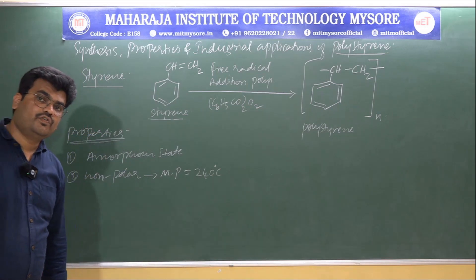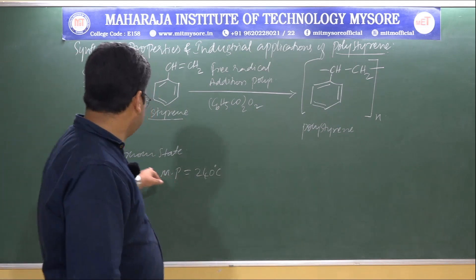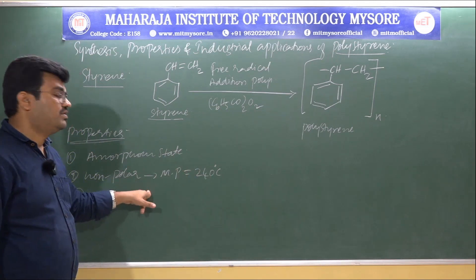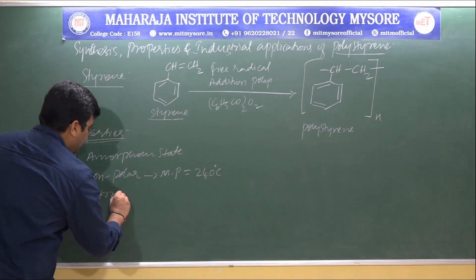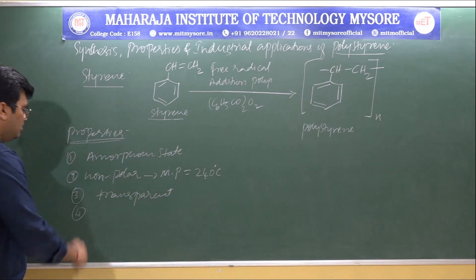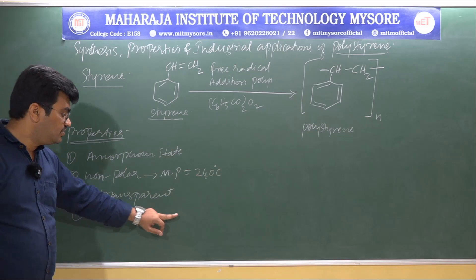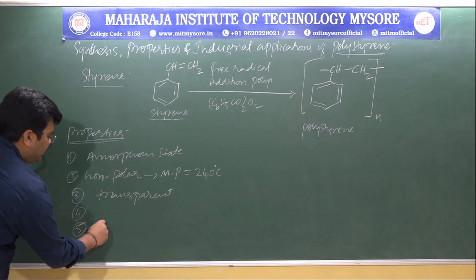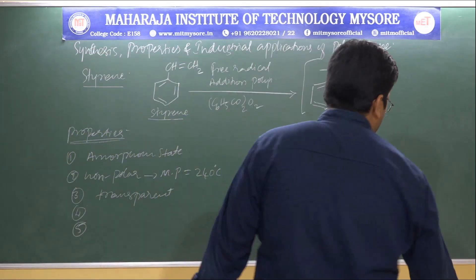Third, polystyrene is stunningly transparent, having good optical clarity. Fourth, it has high tensile strength and is a highly rigid, stiff polymer. Finally, it has a very good insulation property.